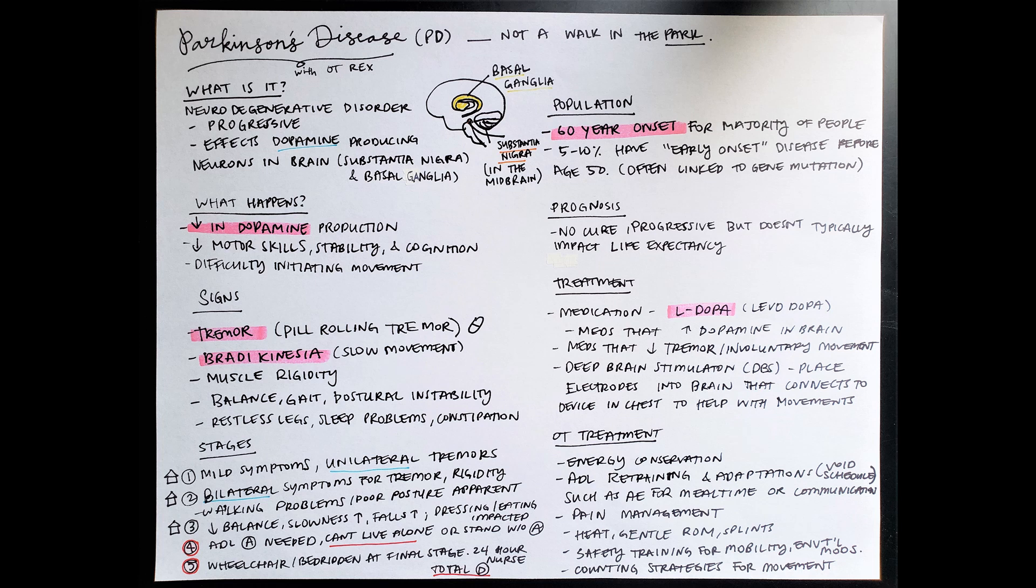By stage four, I drew it around with a red circle for four and five to indicate stop. So what happens here is at stage four, we are no longer able to live by ourselves. We need support. So our activities of daily living need assistance, and we are going to have a very hard time standing without assistance at this stage as well.